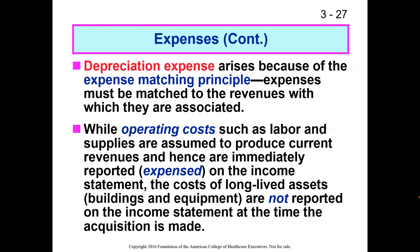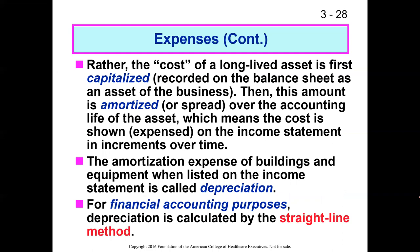Operating costs like labor and supplies are considered short-term: they're used up within a year. Long-lived assets like buildings and equipment are not expensed at time of purchase — instead, they're capitalized on the balance sheet as an asset. They're then divided up based on their useful life. Buildings have a 39-year useful life under GAAP. So a $39 million building divided by 39 years gives $1 million in depreciation expense per year, rather than a $39 million charge in year one.